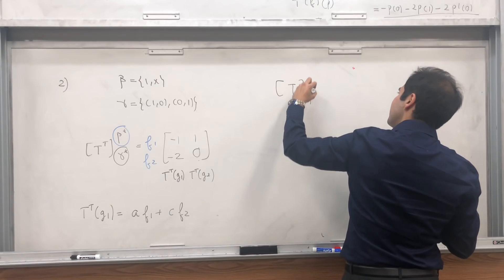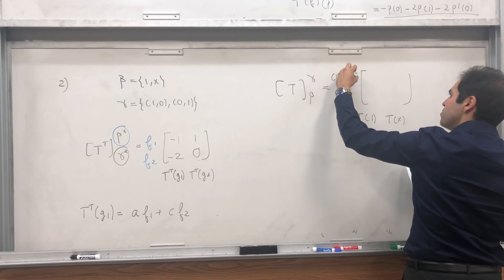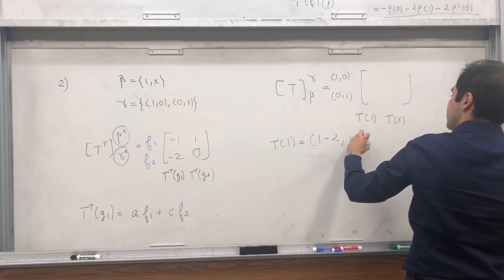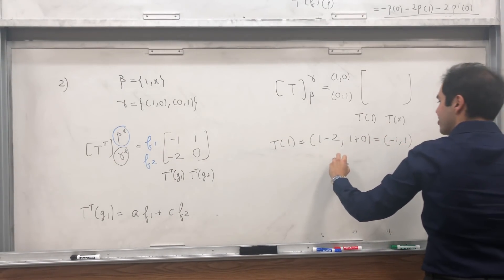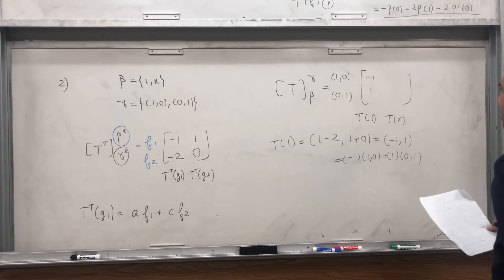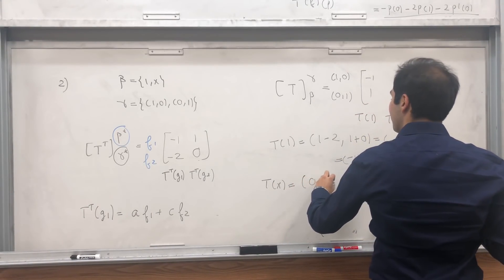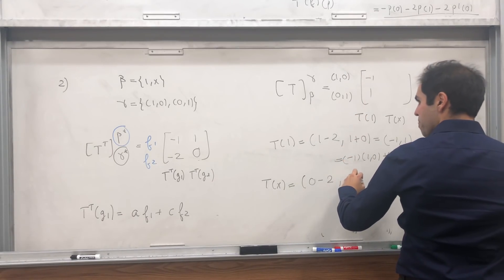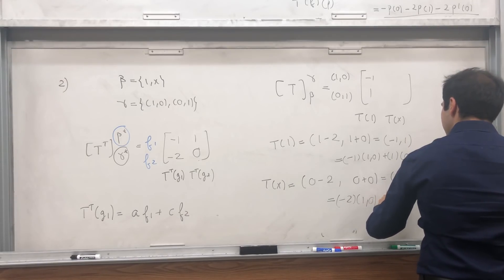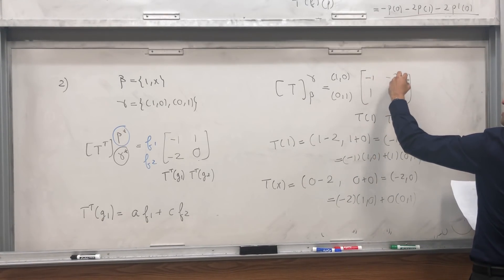So now let's calculate the matrix of T from beta to gamma, and that's much easier. You just calculate the T of 1 and T of X, and express it in terms of (1,0) and (0,1). Now T of 1, I calculated that already. It's 1 minus 2, and then 1 plus 0, so that's minus 1 comma 1, which is minus 1 times (1,0) plus 1 times (0,1). So we get minus 1 and 1. And then T of X, that becomes, so 0 minus 2, so I just use the definition of T, 0 plus 0, that's minus 2 comma 0, which is minus 2 times (1,0) plus 0 times (0,1). So what this is saying is, yeah, the first column is minus 1, 1. The second column is minus 2, 0.